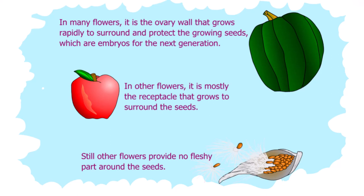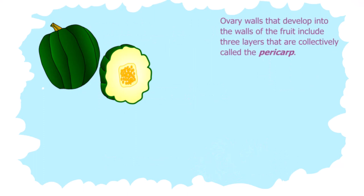In other flowers, it is mostly the receptacle that grows to surround the seeds. Other flowers provide no fleshy part around the seeds. Ovary walls that develop into walls of the fruit include three layers collectively called the pericarp.